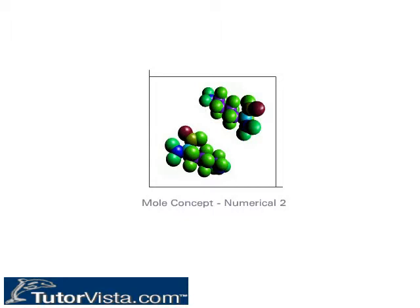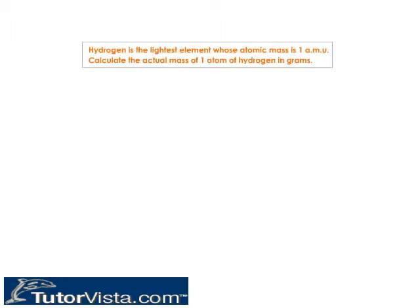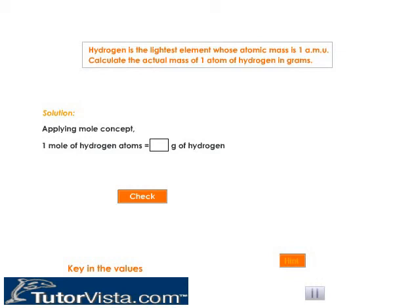Mole concept - a numerical. The lightest of all elements is hydrogen. Its atomic mass is one amu. Let's calculate the actual mass of one atom of hydrogen in grams. Applying the mole concept to this numerical, we have one mole of hydrogen atom is equal to one gram of hydrogen.